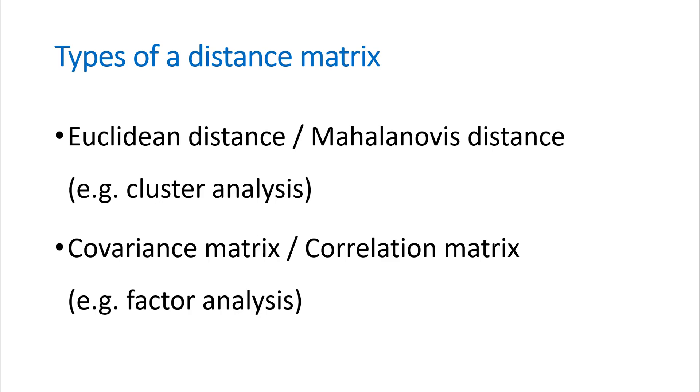And also, covariance and correlation metrics is also kind of distance metrics, because the diagonal term for correlation metrics is 1, but the off-diagonal elements actually between minus 1 to 1. So we use this kind of distance information for factor analysis.